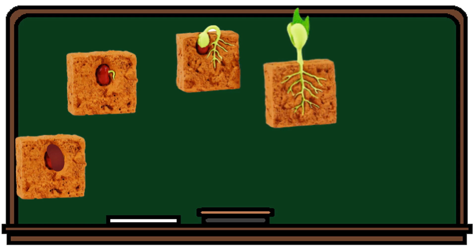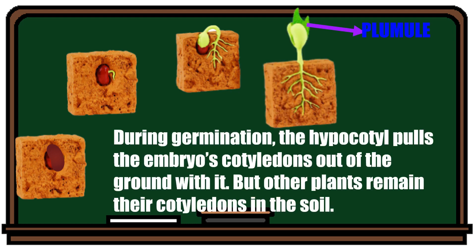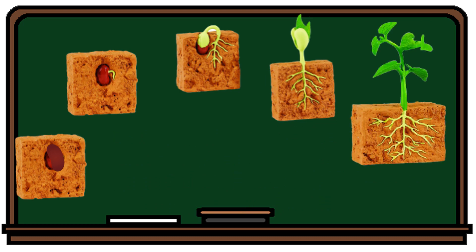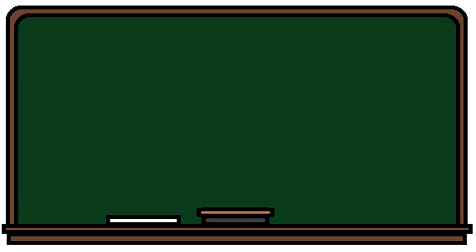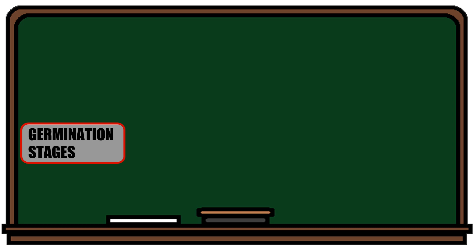The fourth stage is that during germination, the hypocotyl pulls the embryo's cotyledons out of the ground with it, although other plants keep their cotyledons in the soil. And the last stage: the cotyledons will wither when the plant has grown its first true leaves. These are the germination stages of a seed.